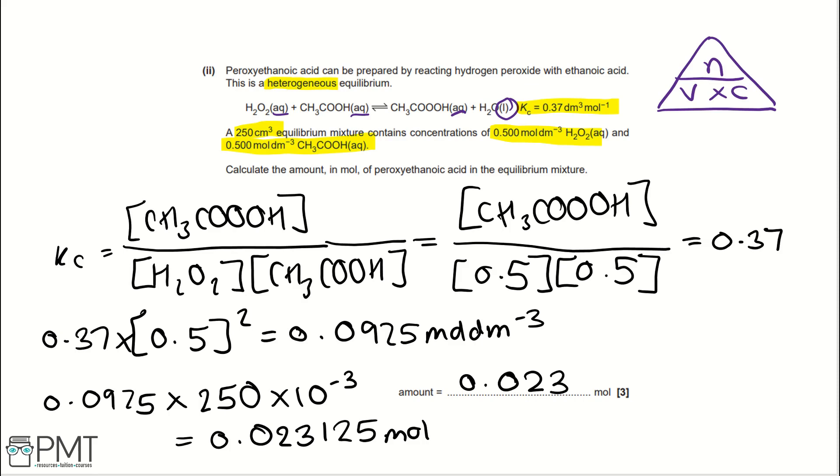For this question, you get a mark for writing your expression for Kc, a mark for working out the concentration of peroxyethanoic acid, and then a mark for working out your moles correctly.